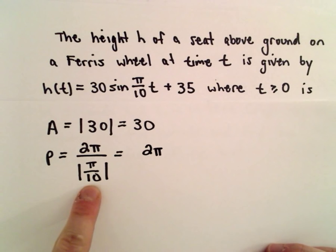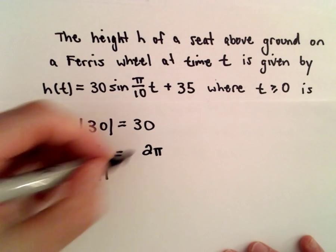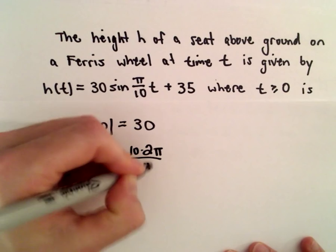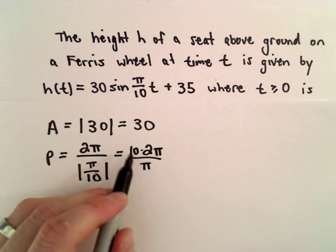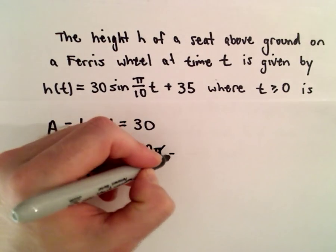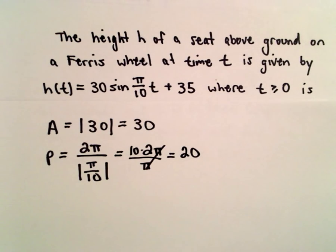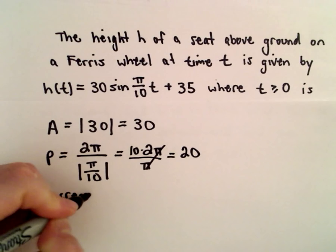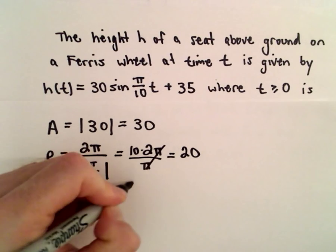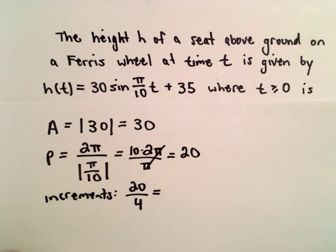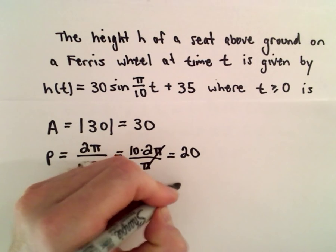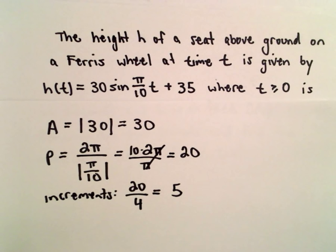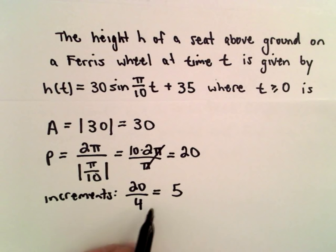The absolute value of π/10 is just π/10. You can flip and multiply, so the π's will cancel and you'll have 10 times 2, which is 20. To get my increments on the x-axis, I take the period for sine — in this case 20 — and divide it into four equal pieces. 20 divided by 4 is 5, so I'll go over 5, 10, 15, 20, etc. on my x-axis.